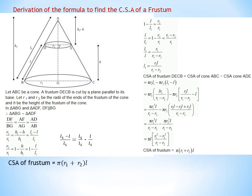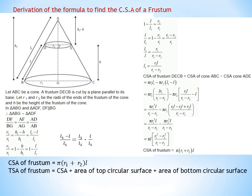So the curved surface area of the frustum is π(R1+R2)L. The total surface area of the frustum equals curved surface area plus area of top circular surface plus area of bottom circular surface, which is π(R1+R2)L + πR1² + πR2².